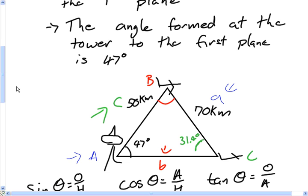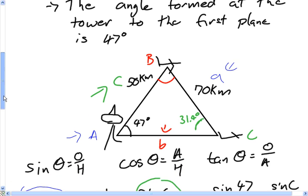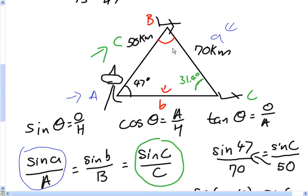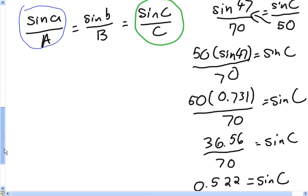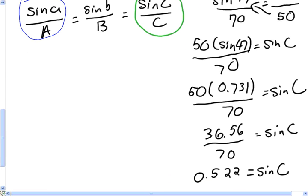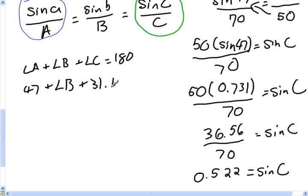So I now have both the measurements for A. I have the side and the angle, and both the measurements for C, the side and the angle. I don't have the side B yet. Can I solve for angle B? Anyone know what all the angles of a triangle add up to? Yes. So we know that angle A plus angle B plus angle C are going to equal 180 degrees. Angle A was 47, we don't know what angle B was, and angle C we just discovered was 31.4.